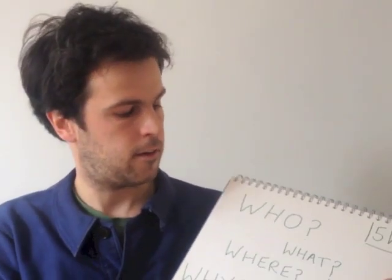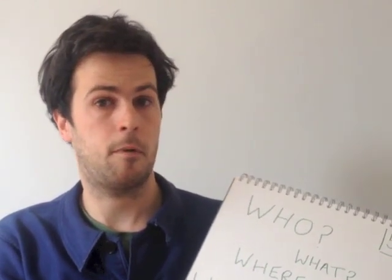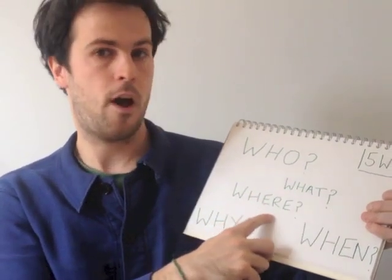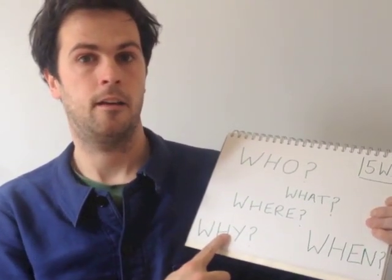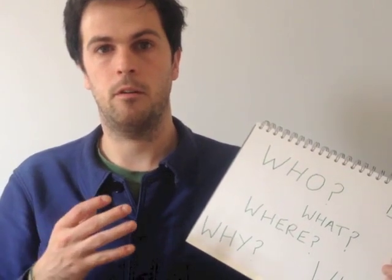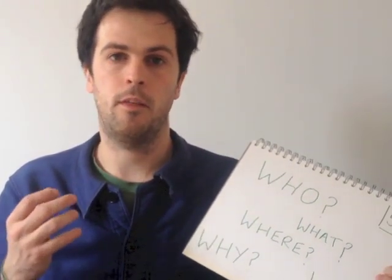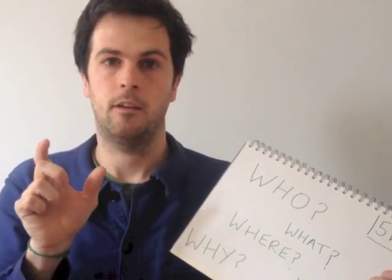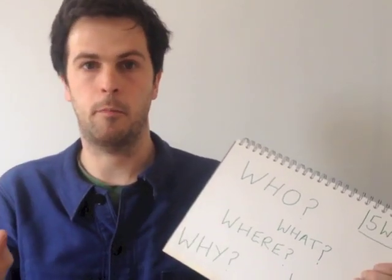Any good story is going to have five key components which will tell the reader or the listener everything they need to know. I use the five Ws to remember these: who, what, where, when and why. These five Ws can be applied to any kind of story you're telling — whether you're making a film, writing a longer piece, or equally for much shorter pieces of media such as a tweet, a Facebook post or an SMS.